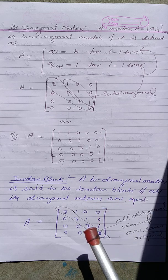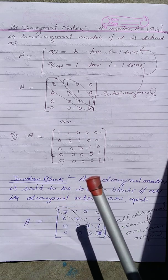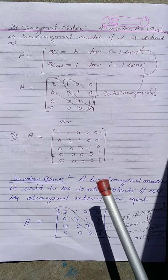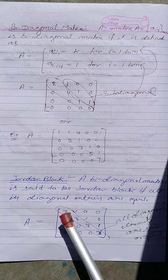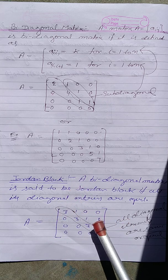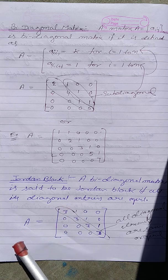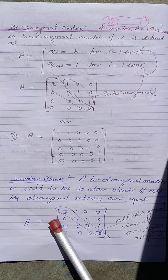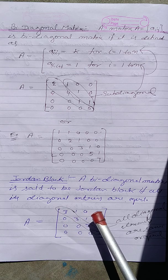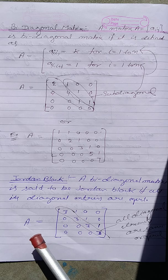A Jordan block is a matrix in which all diagonal elements are always equal — these equal values come from the eigenvalue of the matrix — and the superdiagonal elements are all 1. A bidiagonal matrix with equal diagonal elements and superdiagonal elements of 1 is known as a Jordan block.